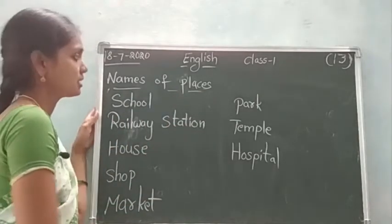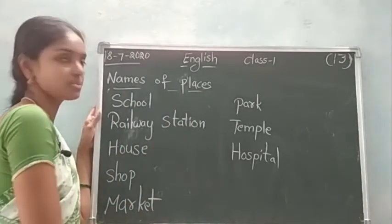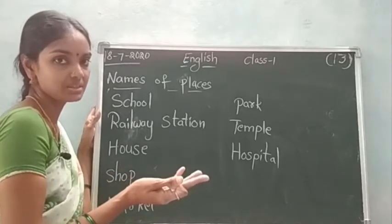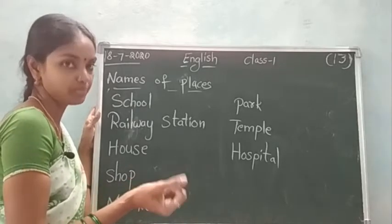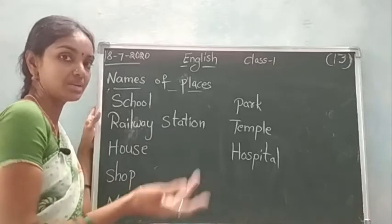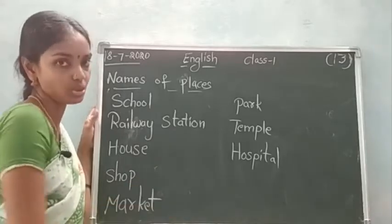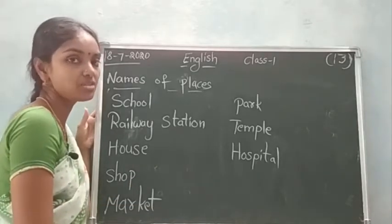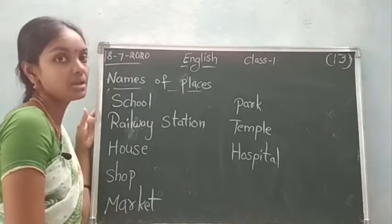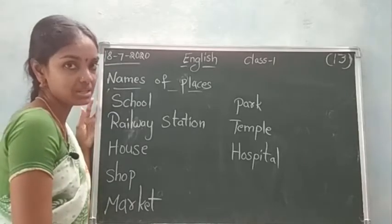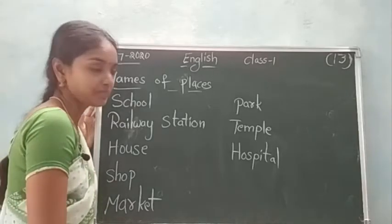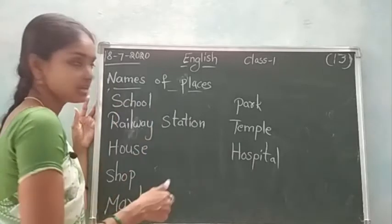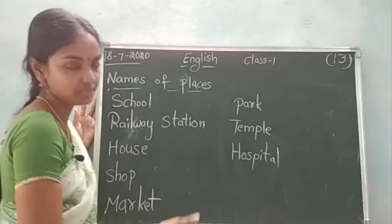Names of places are one type of noun. Nouns talk about people, places, animals, and things also. Names of people, places, animals and things — these are called nouns. Names of persons, places, animals, things — these are all nouns. All of you see and say after me.